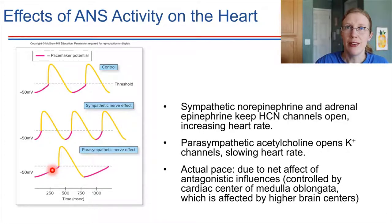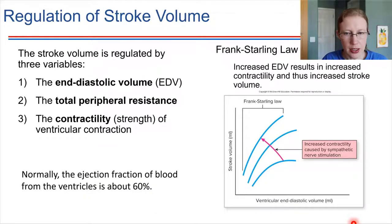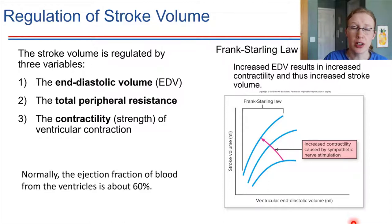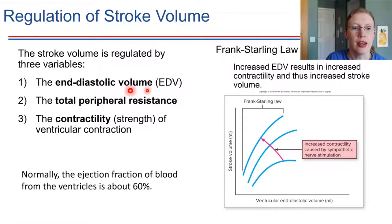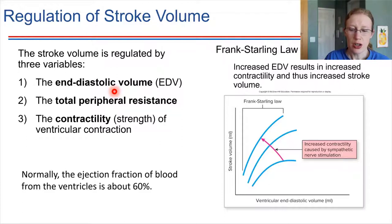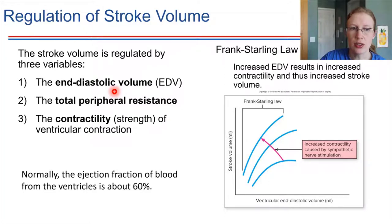There are also things that influence stroke volume. The stroke volume — how much blood is ejected from the heart per beat — is affected by three key things. Number one: the end diastolic volume, which describes how much blood is sitting in the ventricles right before they contract, at the end of the resting phase. The larger the volume of blood, the more strongly the heart will contract, increasing stroke volume. If there's less blood in the ventricles, stroke volume will be lower.